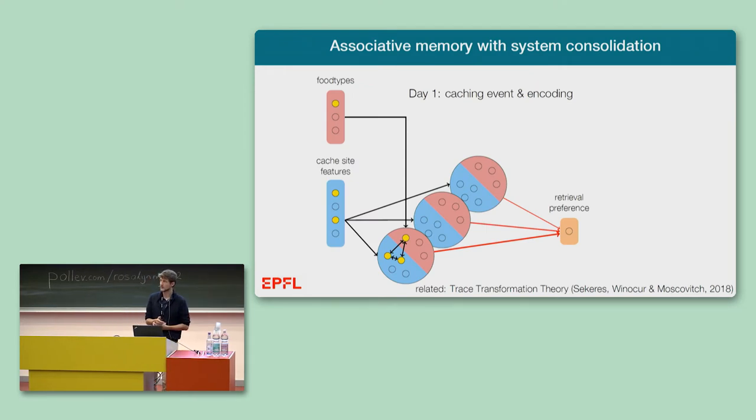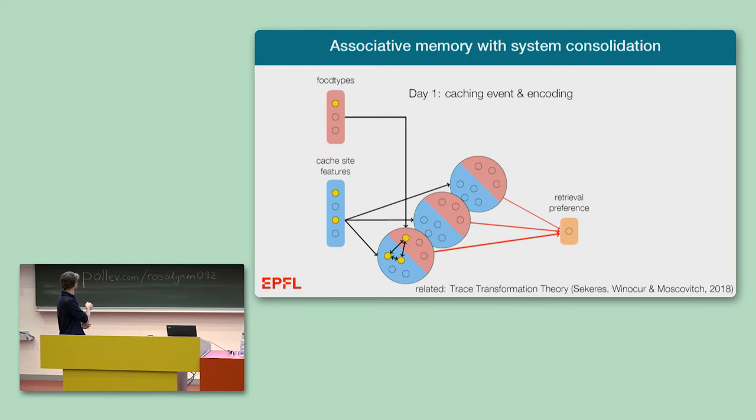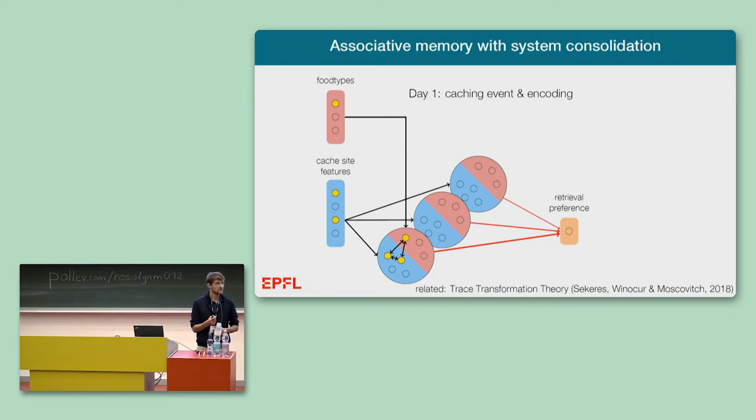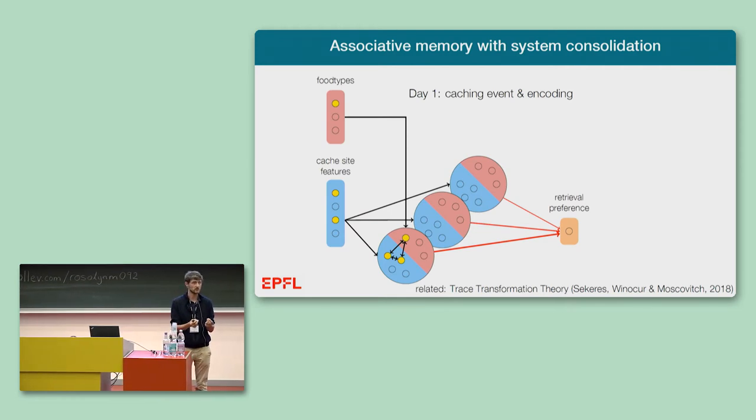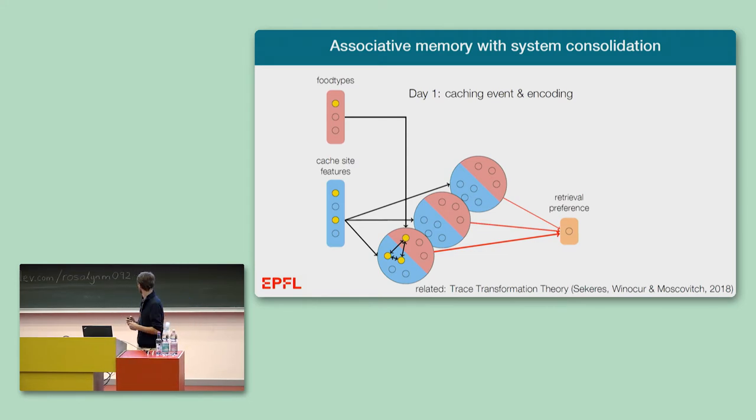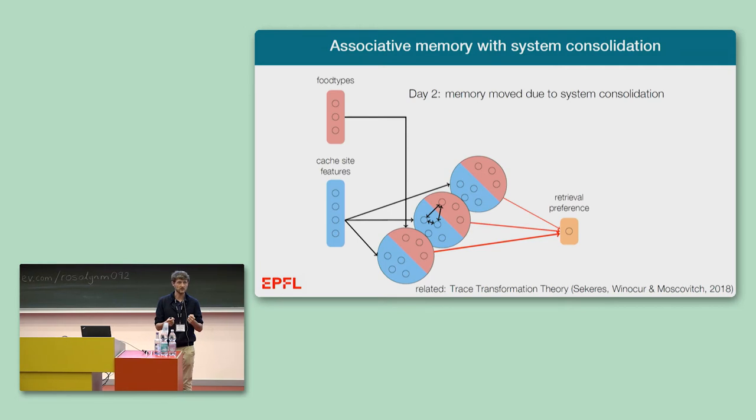Let me move on to the description of the associative memory module. Whenever a simulated bird caches a food item at a certain site, we bind together the cache site features with the food type in the associative memory. We postulate that this association, the physical location of this association, moves over time from one network to the next network through a process called system consolidation. Related ideas have been formulated in the trace transformation theory by Nadel, Winocur, and Moscovitch, to capture some phenomena around episodic memory in rodents and humans. We simply assume that, for example, over the course of a night, the association between food type and cache site features moves from one network to the next one.